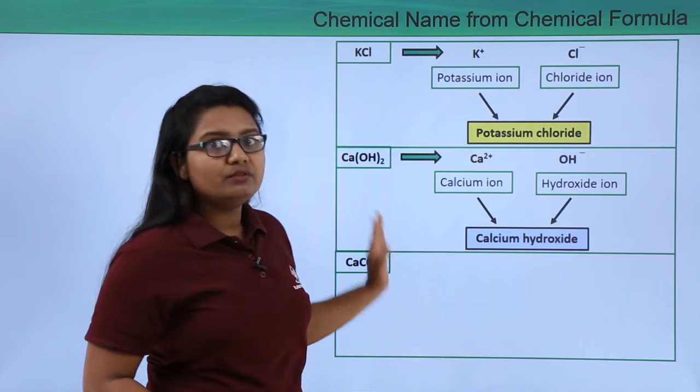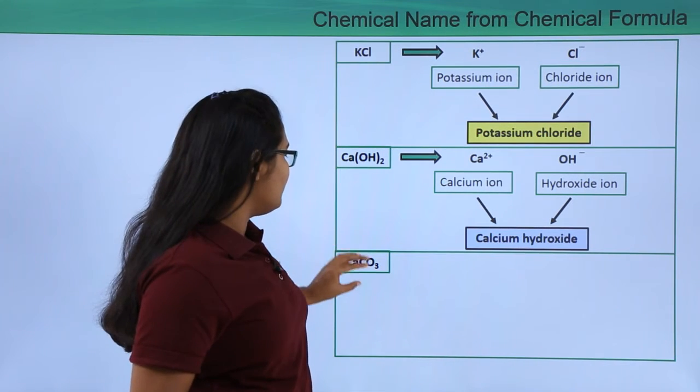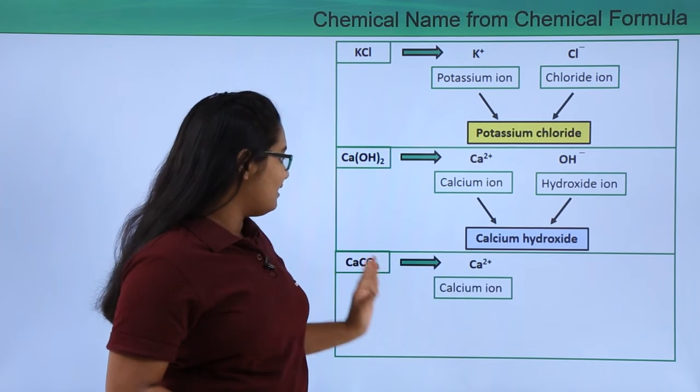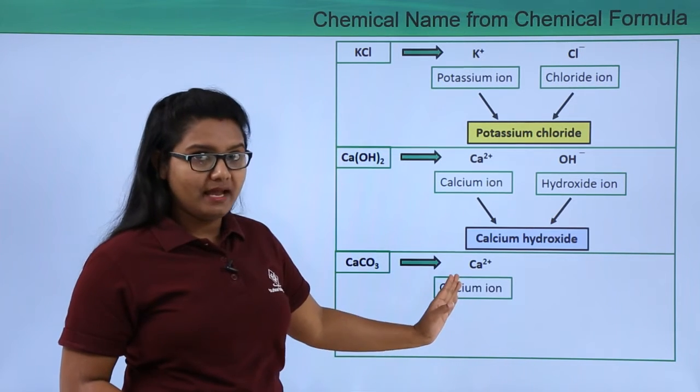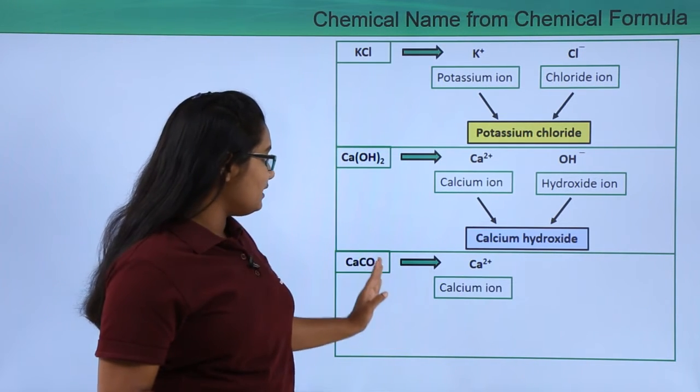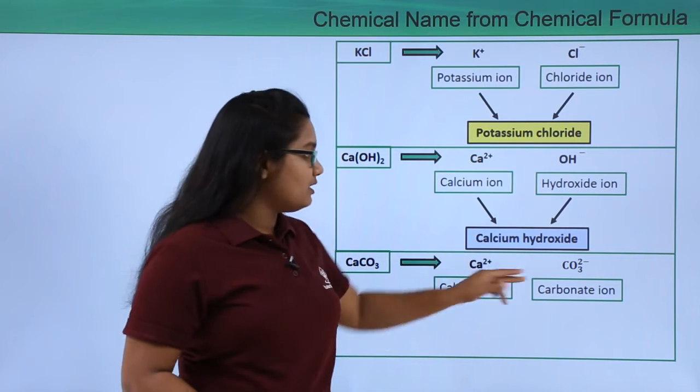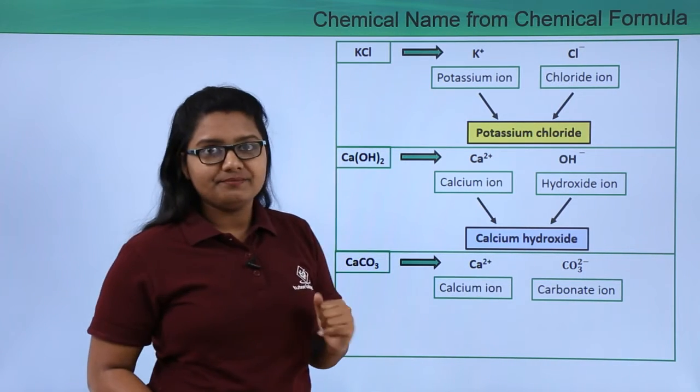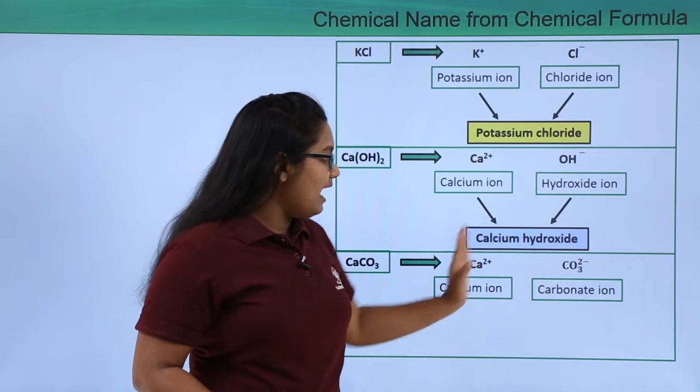Now this is a formula of a compound which is CaCO3. Now here we can find out that it has a calcium ion that is Ca2+ and CO3 which is a carbonate ion which is denoted as CO3 2-.